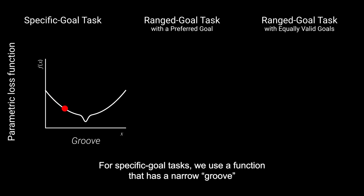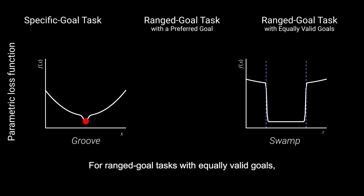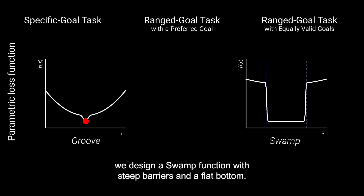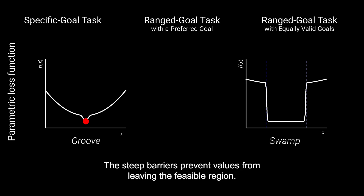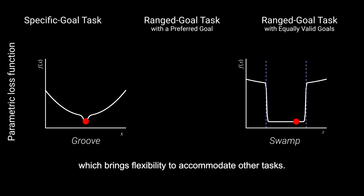For specific goal tasks, we use a function that has a narrow groove to steer task values towards the goal. For range goal tasks with equally valid goals, we design a step function with steep barriers and a flat bottom. The steep barriers prevent values from leaving the feasible region, and the flat bottom ensures that any solution within the range is equally good, which brings flexibility to accommodate other tasks.